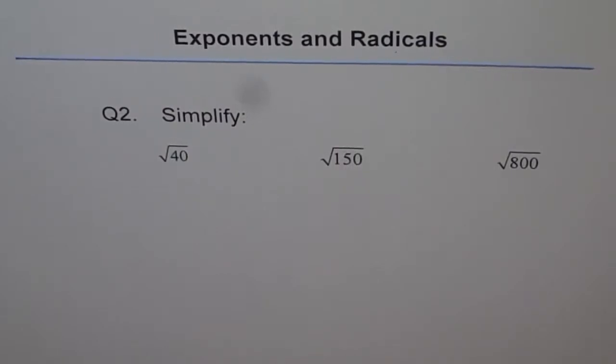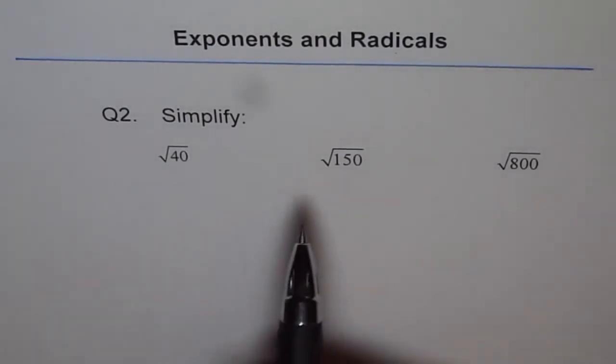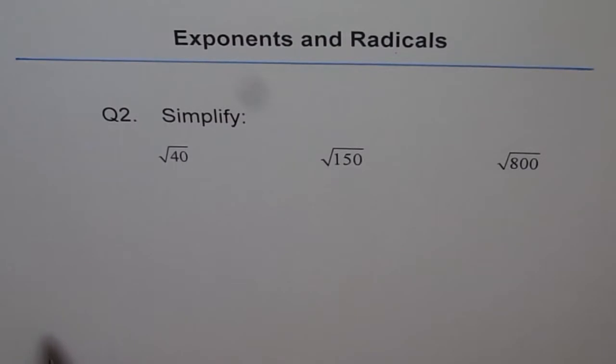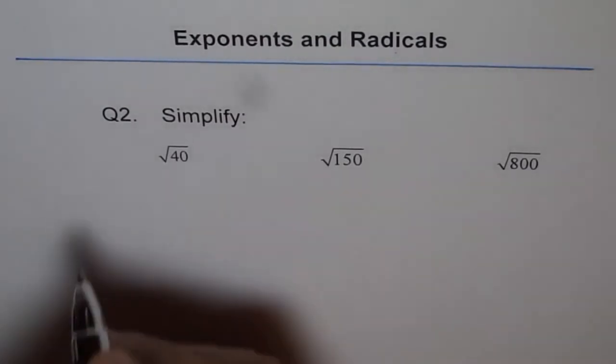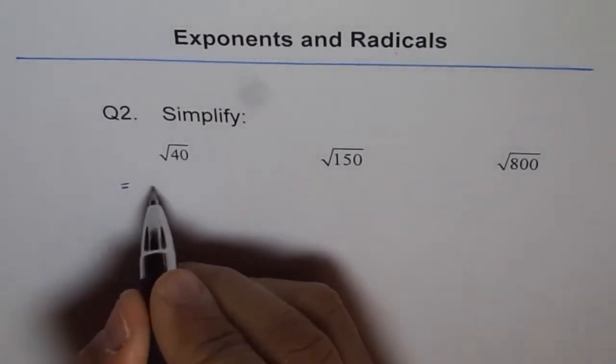Exponents and radicals, question 2: Simplify square root of 40, square root of 150, and square root of 800. Let's do them one by one. Square root of 40 can be written as square root of 4 times 10, and 4 is a perfect square—it's the square of 2.